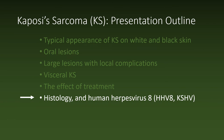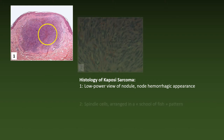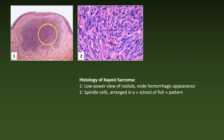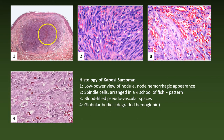Last but not least, a chapter on histology and the human herpesvirus 8, HHV-8, also called Kaposi's sarcoma herpesvirus, KSHV. Picture 1: a low power view of a nodule — note the hemorrhagic appearance. Picture 2: the spindle cells arranged in a school-of-fish pattern. Picture 3: the blood-filled pseudovascular spaces. And picture 4: the globular bodies, which correspond to degraded hemoglobin.